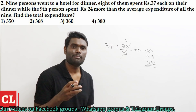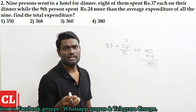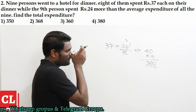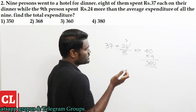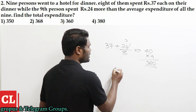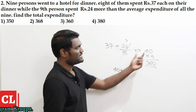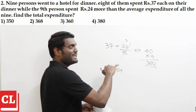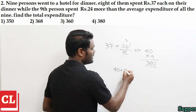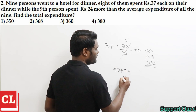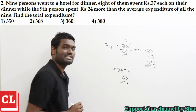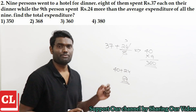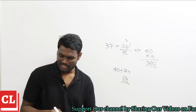If they ask us to find what is the amount spent by the 9th person: the average is 40, and the 9th person spent 24 more than the average, so 40 plus 24 = 64 rupees is the amount spent by the 9th person.